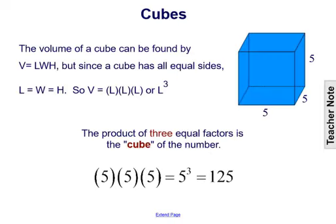Cube roots. The volume of a cube can be found by using the formula: volume equals length times width times height. But since a cube has all equal sides, the length equals the width, which equals the height.